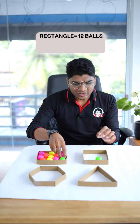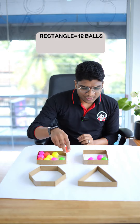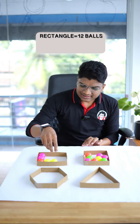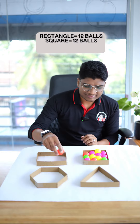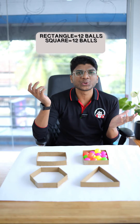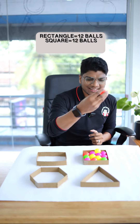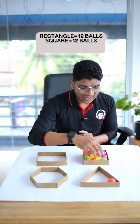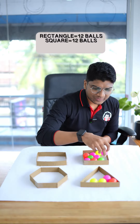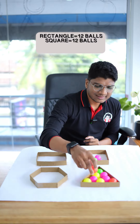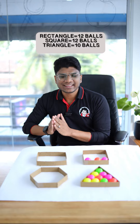Now, you can count as square: 1, 2, 3... 12, 13. So, you can count as triangle: 1, 2, 10, and 10.